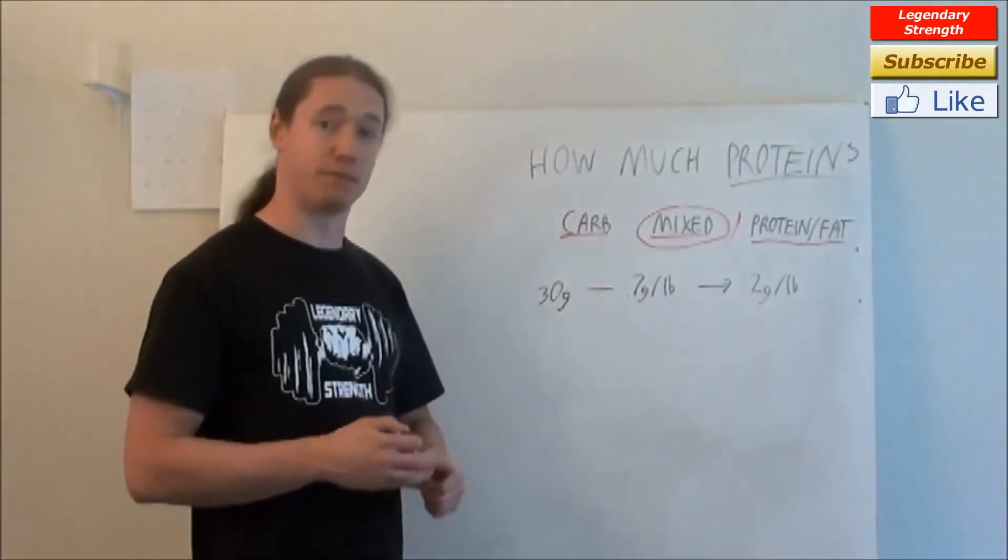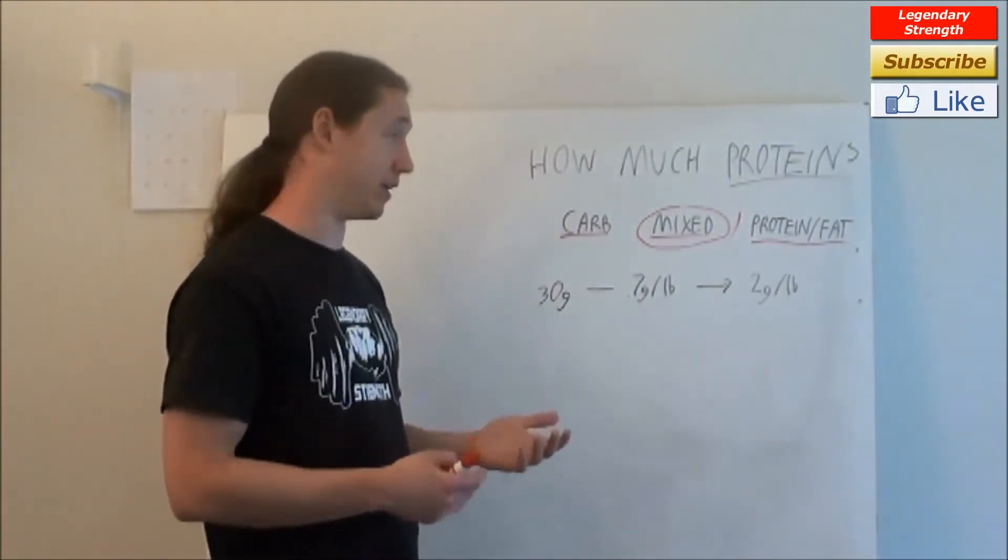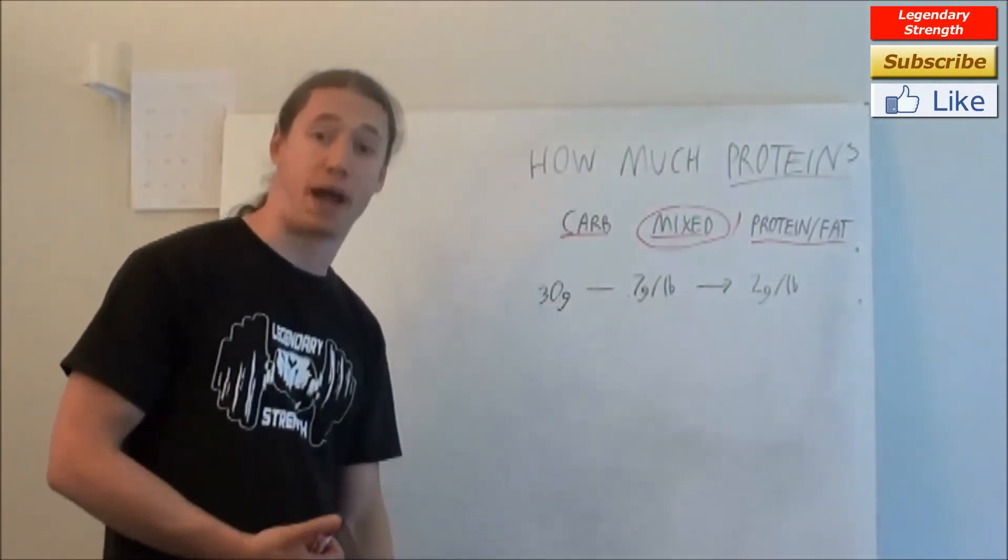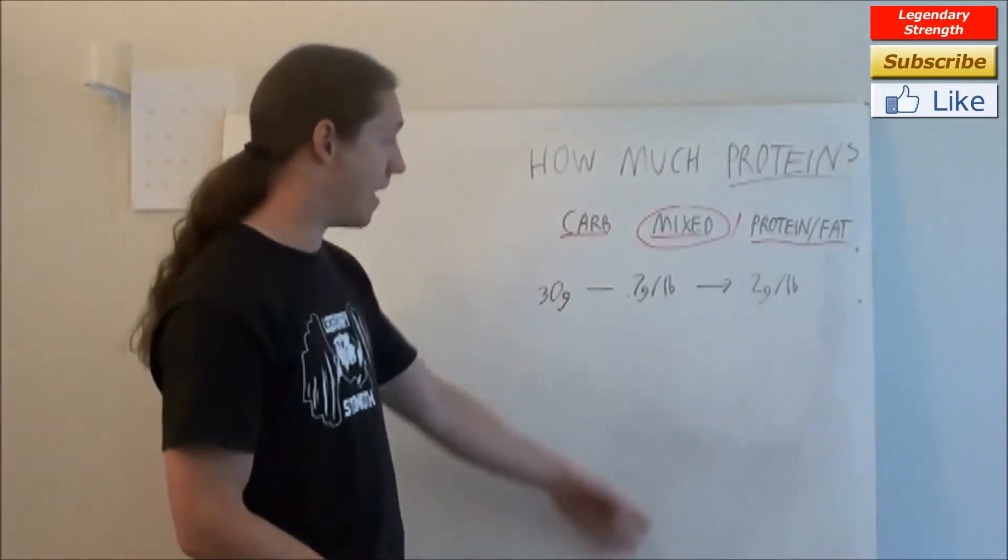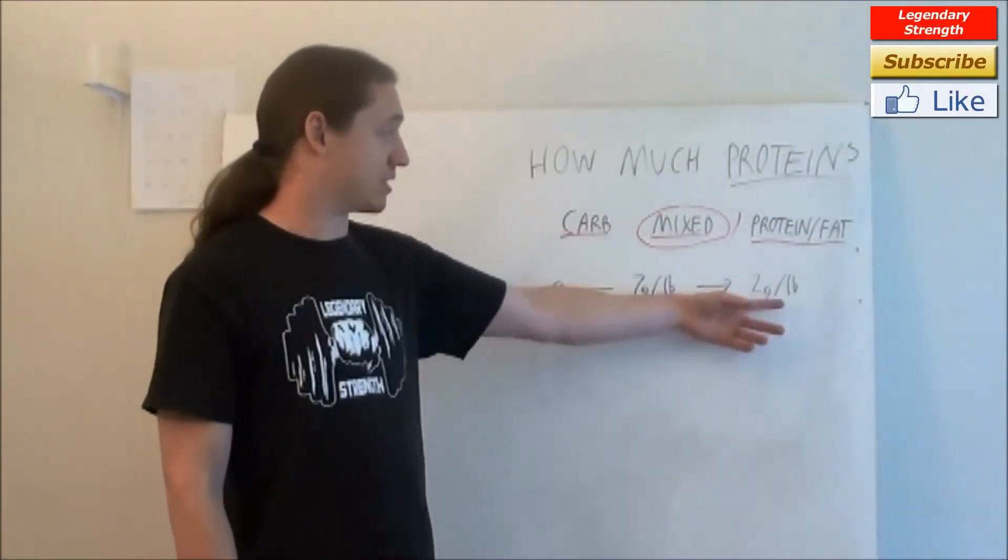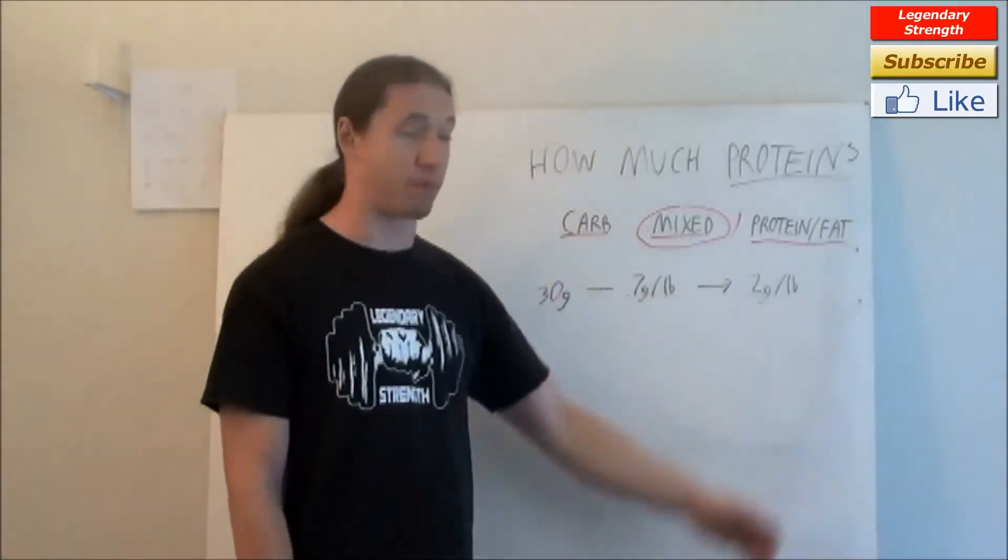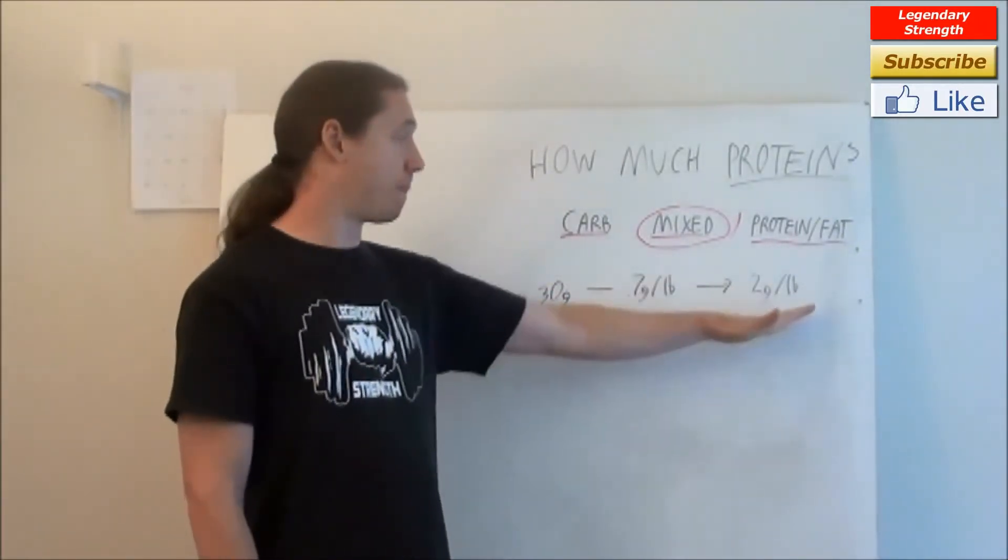Now, sort of an average number that people will say is good - once again, it's really going to depend on this stuff - is 0.7 grams of protein per pound of body weight. With bodybuilders, they go up to something like 2 grams. Definitely 1 gram is in there, but 2 grams per pound of body weight. And they go overboard with this.